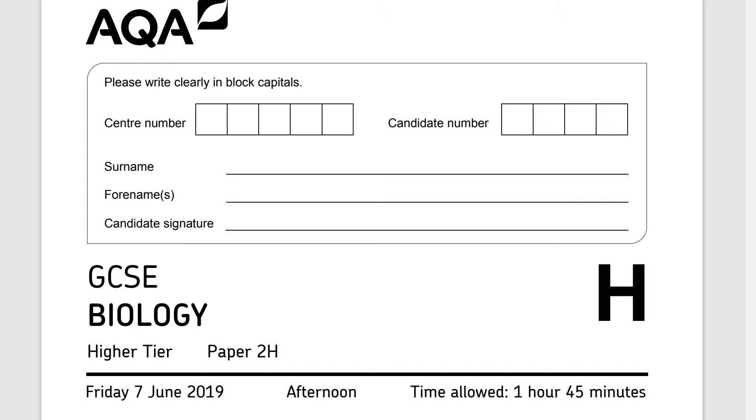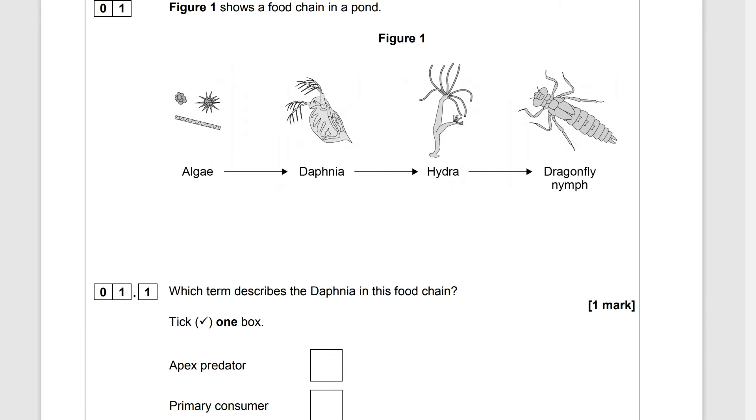It is a difficult paper and it can seem a bit daunting but don't forget to look at the grade boundaries because they are quite generous. Figure one shows a food chain in a pond.